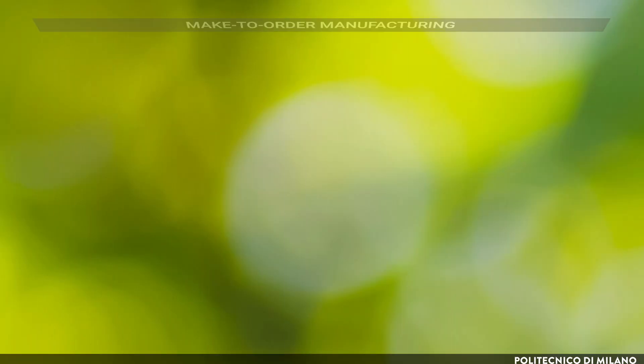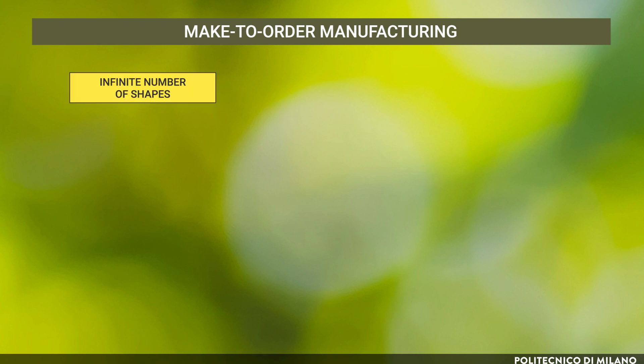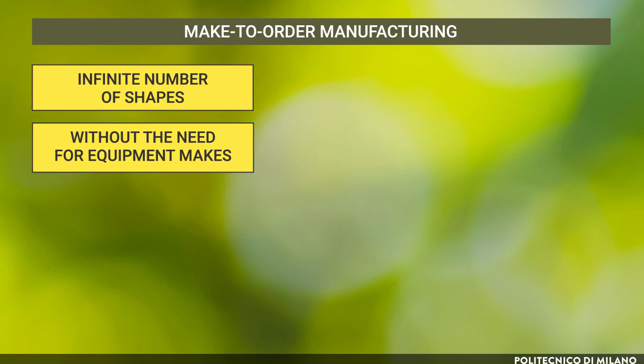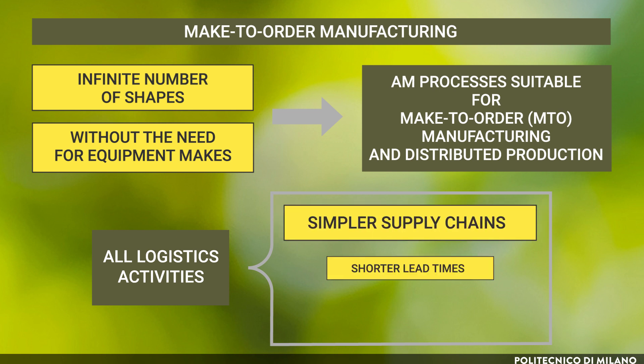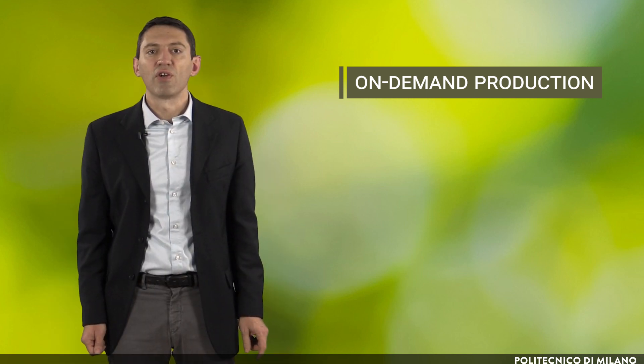The fourth driver is make-to-order manufacturing. The potential to produce an infinite number of shapes without the need for specific equipment makes additive manufacturing processes suitable for make-to-order manufacturing and distributed production. All logistic activities are influenced positively because of simpler supply chains with shorter lead times and lower inventories. On-demand production needs a more responsive manufacturing chain, but the risks of overproduction and product obsolescence are avoided. The economic lot size moves toward the ideal limit of the single unit, making mass customization economically viable.